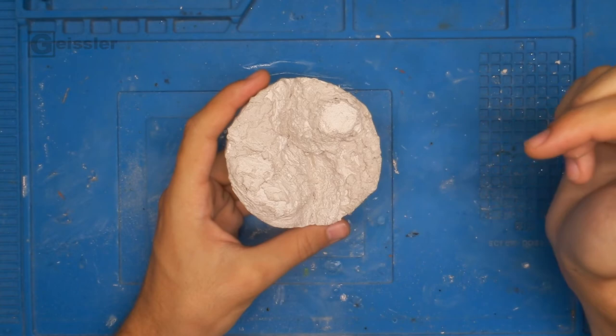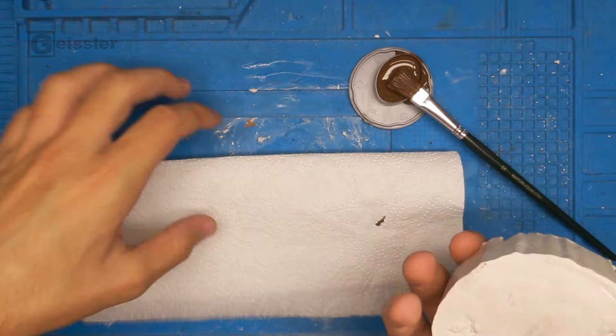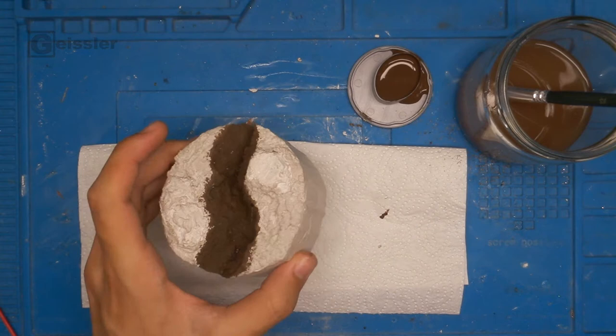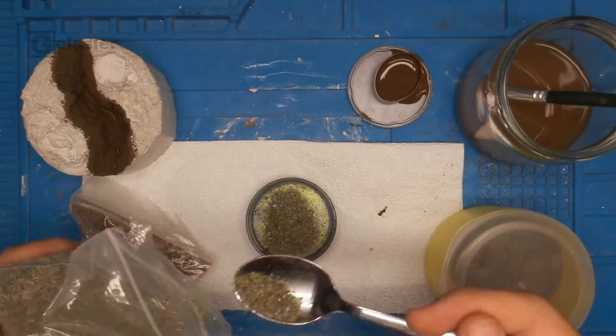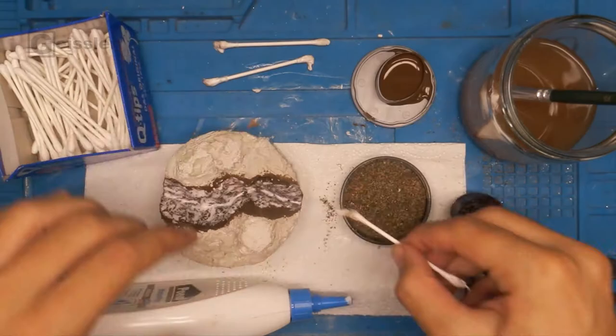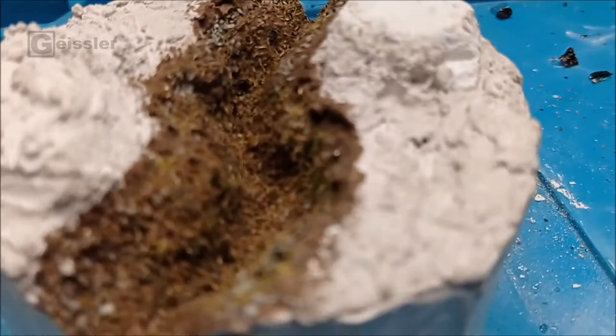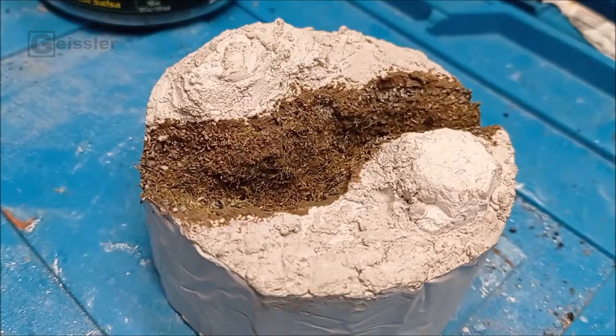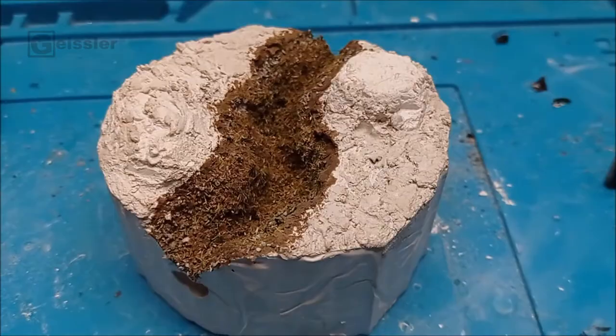Alright so while this is drying I'm making a little mix out of these to give it a bit more texture. Alright so now I got this swampy look I was going for. My mixture made out of gravel, grass and a bit of dirt turned out pretty good. So let this dry and then I pour in the fake water.